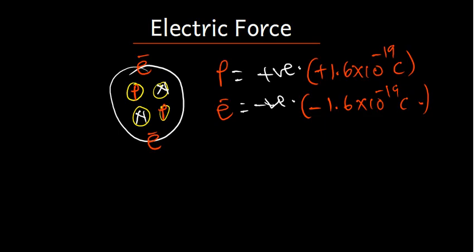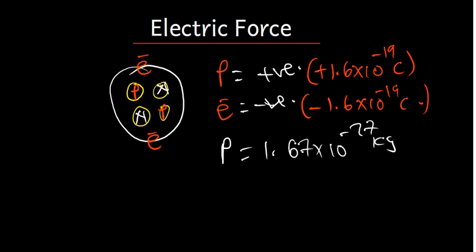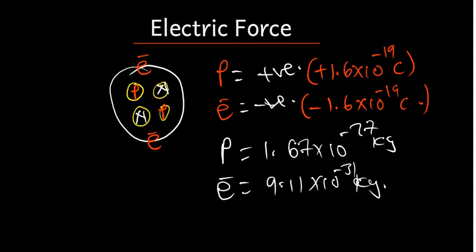These two charges also have masses. The mass of the proton is 1.67 times 10 to the power negative 27 kilograms. The mass of the electron is 9.11 times 10 to the power negative 31 kilograms. So: proton charge is +1.6×10⁻¹⁹ C, electron charge is −1.6×10⁻¹⁹ C; proton mass is 1.67×10⁻²⁷ kg, and electron mass is 9.11×10⁻³¹ kg.